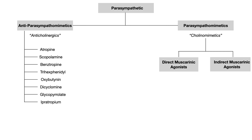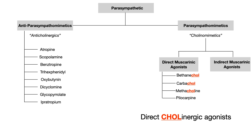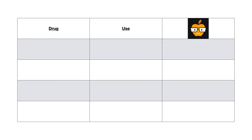The four main direct muscarinic agonists you need to know are: bethanechol, carbachol, methacholine, and pilocarpine. Note that with the exception of pilocarpine, they all have 'chol' in the name — because these are direct cholinergic agonists. If you can't remember the exact mechanism on test day and the drug has 'chol' in the name, it's a direct cholinergic agonist.